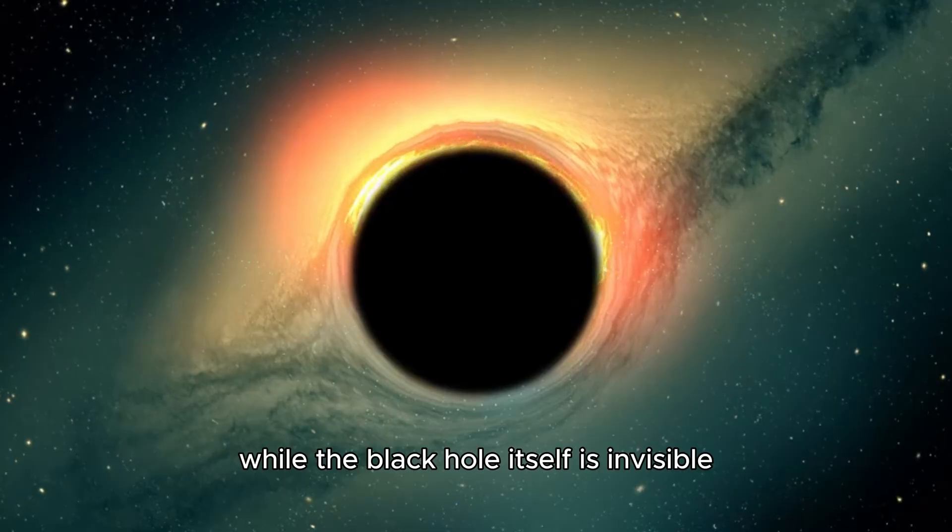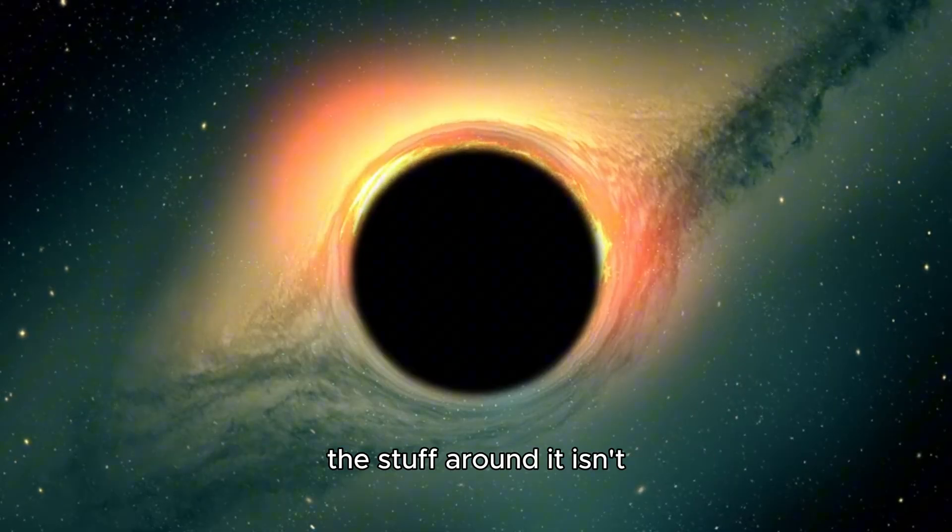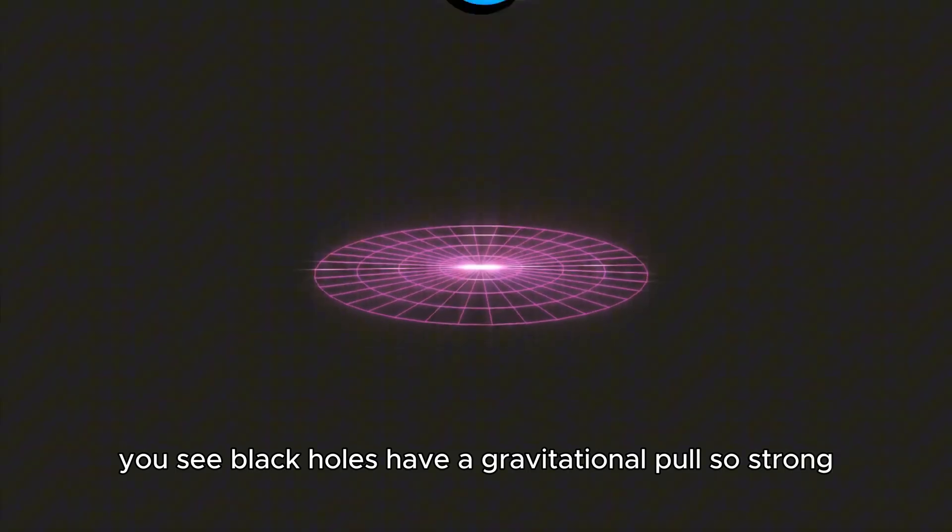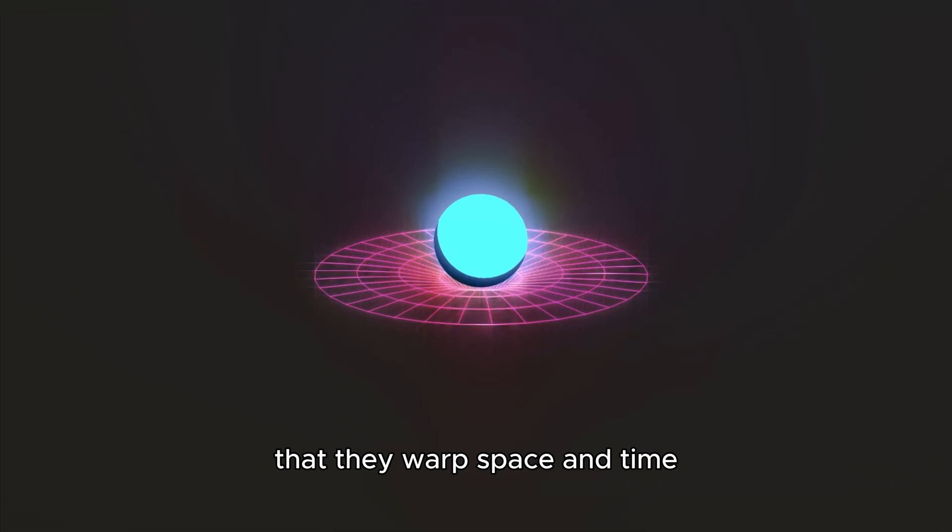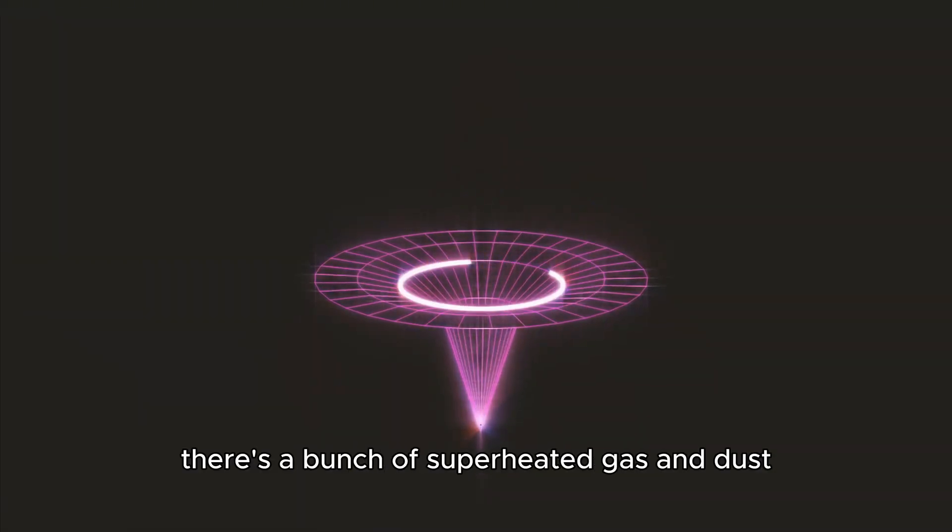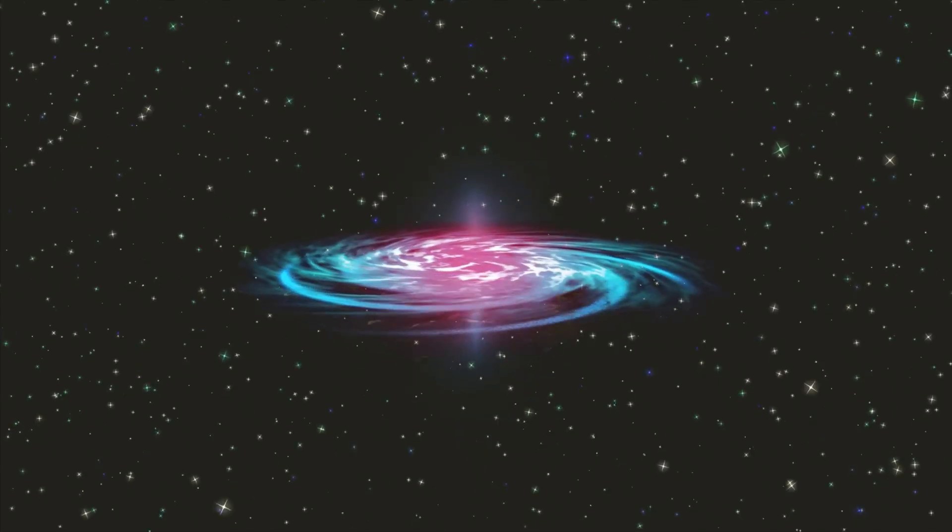Well, it turns out that while the black hole itself is invisible, the stuff around it isn't. You see, black holes have a gravitational pull so strong that they warp space and time. And right at the edge, there's a bunch of superheated gas and dust swirling around - that is what we photographed.